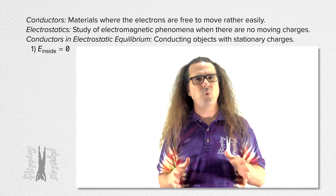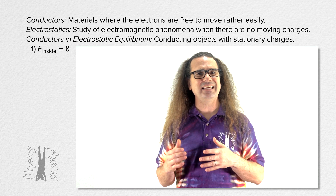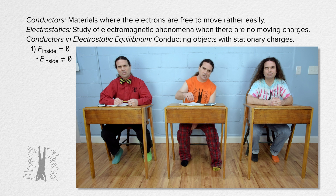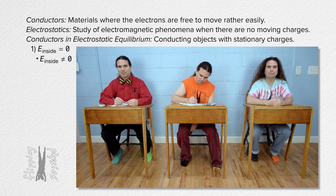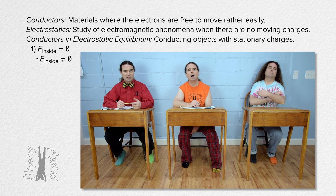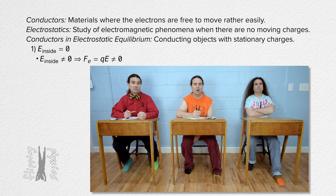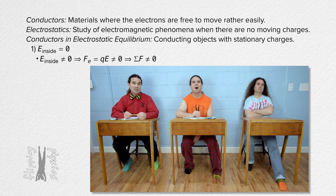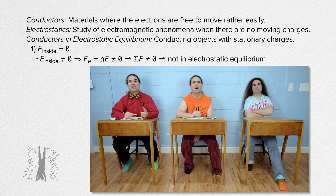What would happen if the electric field inside a conductor in electrostatic equilibrium were not equal to zero? If there were an electric field inside a conductor in electrostatic equilibrium, then the charges on the conductor would experience an electrostatic force equal to the charge times the electric field. The charges would experience an acceleration, and the conductor would not be in electrostatic equilibrium. Therefore, there must be zero electric field inside a conductor in electrostatic equilibrium.